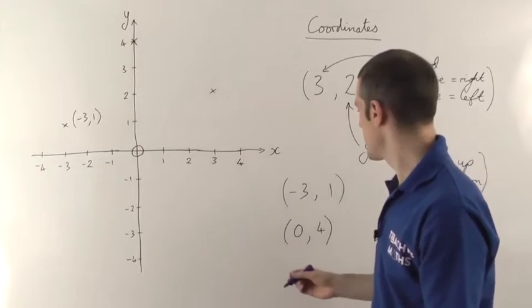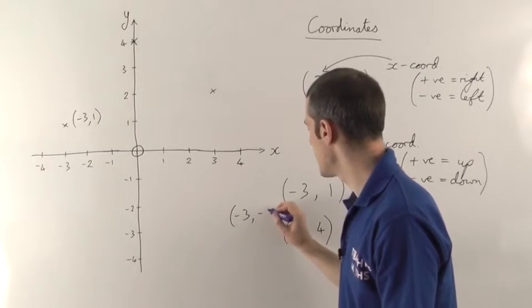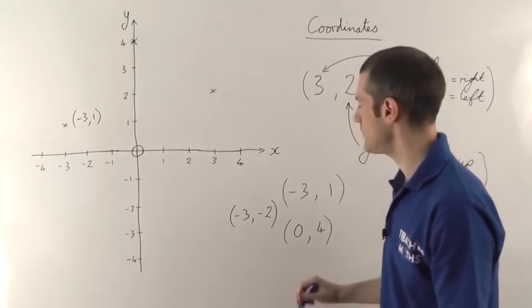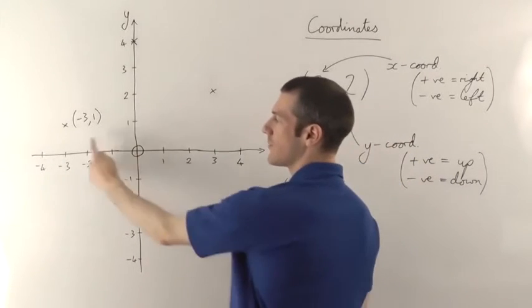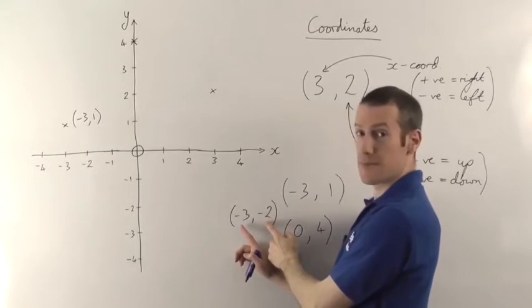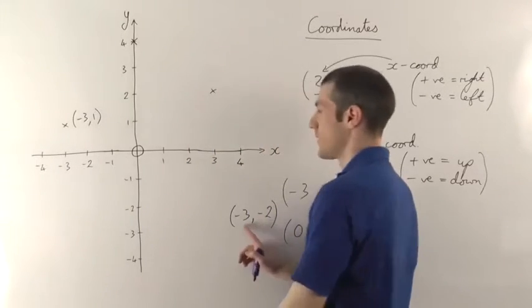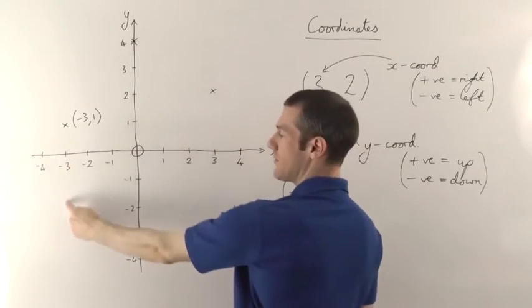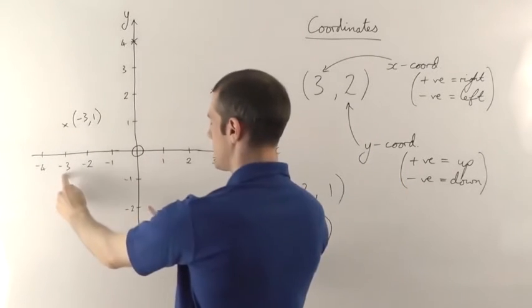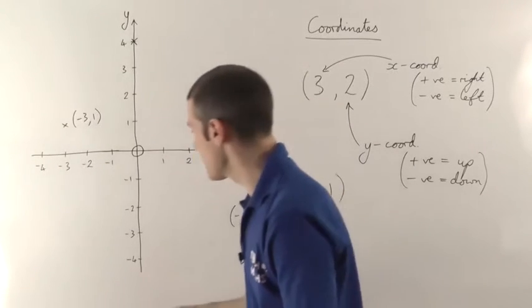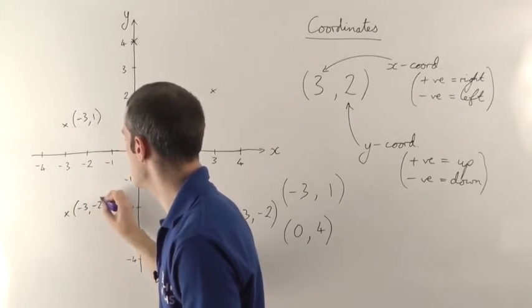Let's do a couple more. So if we have, go over here now. So have minus 3 comma minus 2. So for this one, the x coordinate is minus 3. So from the origin, go 3 to the left until you're at minus 3. The y coordinate is minus 2. So y, remember, if it's negative, means you're going down. So having gone to minus 3 on the x, you go down to minus 2. There it is on the y. So it's where the minus 3 and the minus 2 meet. Minus 3 and minus 2, they're going to meet here. So you put a cross there. So that would be the point minus 3 comma minus 2.